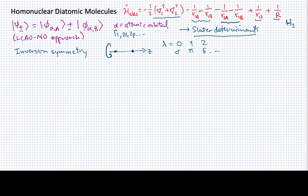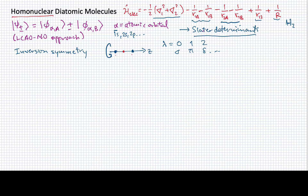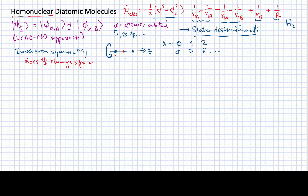This inversion symmetry reflects something relevant for an object that has cylindrical symmetry. So what we're going to do is look at the inversion through the center of the molecule. We are mostly focusing in this video on homonuclear diatomics, where the two atoms A and B are the same type, so the midpoint of their bond is the center of the molecule. What we're interested in is how does the wave function behave when you invert through that center — does the wave function change sign when you go to the opposite side?